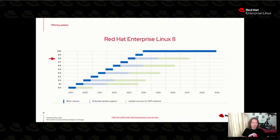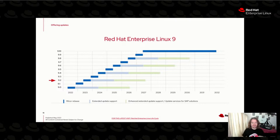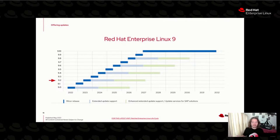I'm going to jump ahead to the RHEL 9 minor release schedule. You can see that we've got minor releases every six months all the way up to RHEL 9.10, which will be the final minor release of RHEL 9. We just released 9.2, and the even-numbered releases have a little bit longer lifecycle.